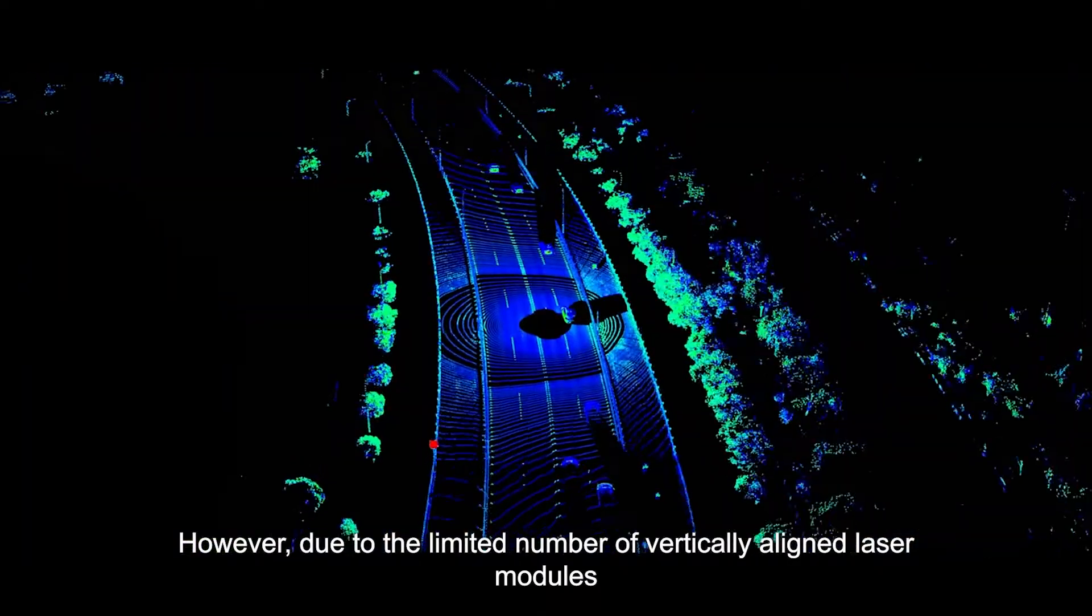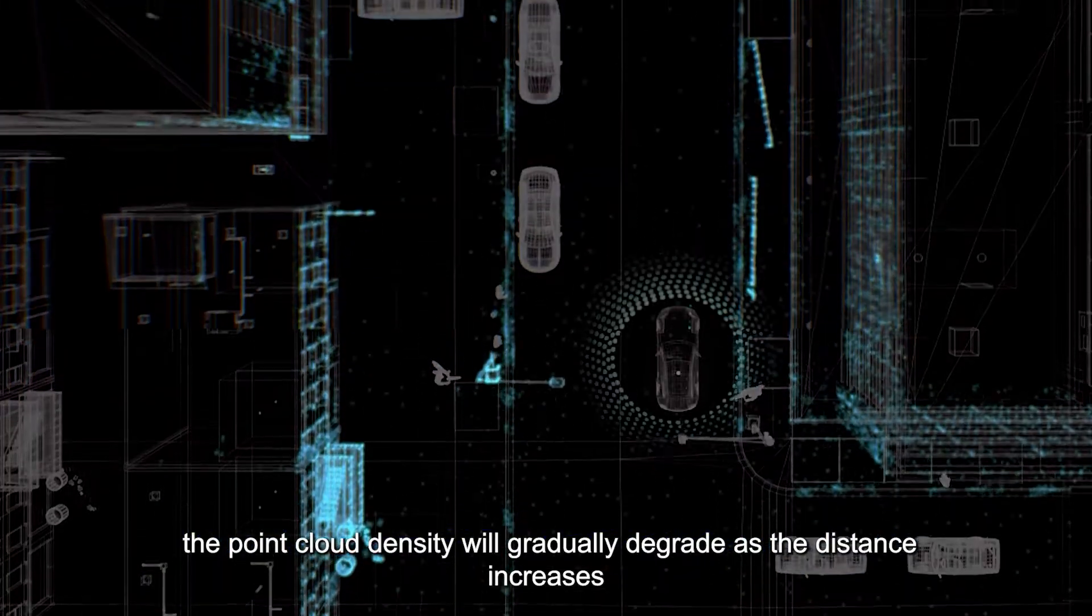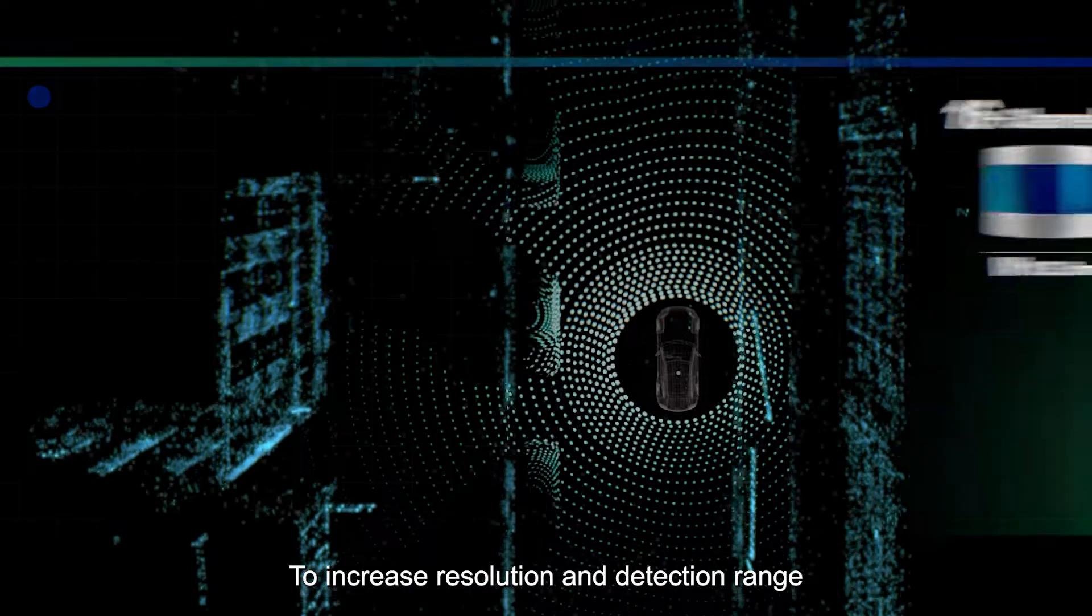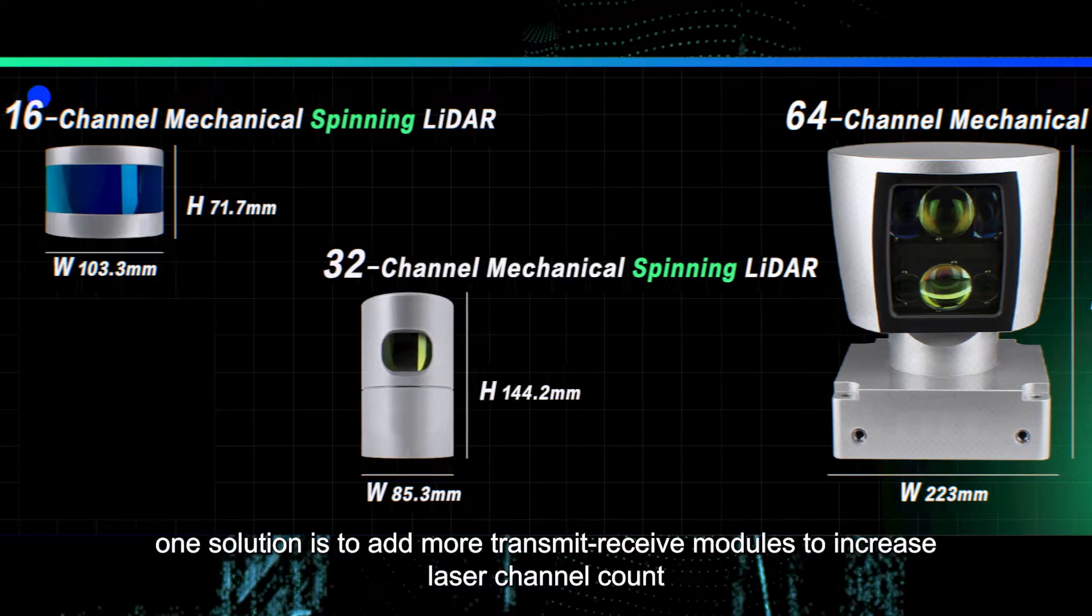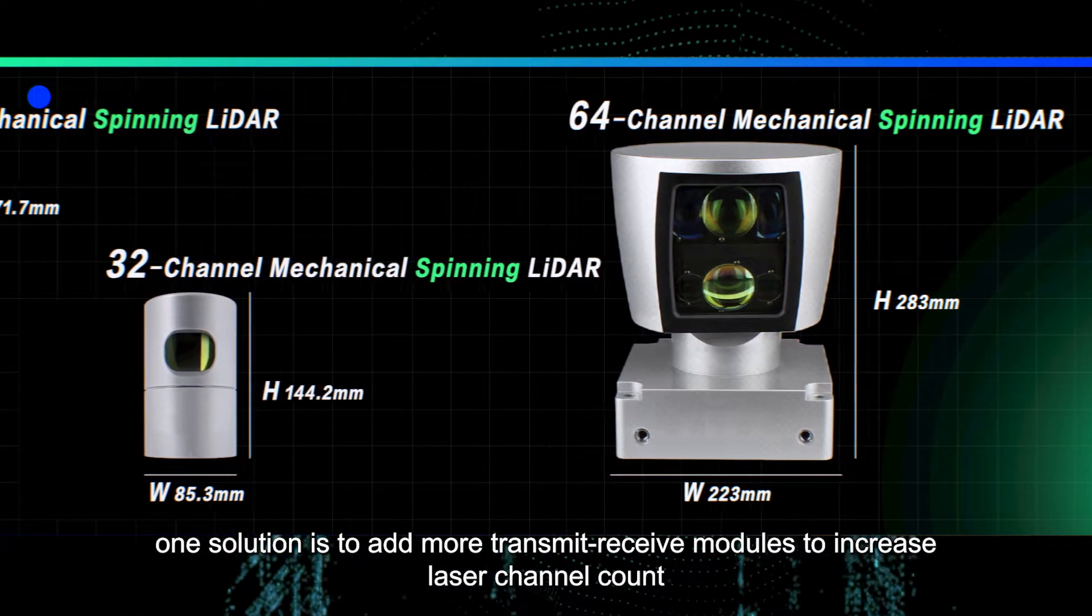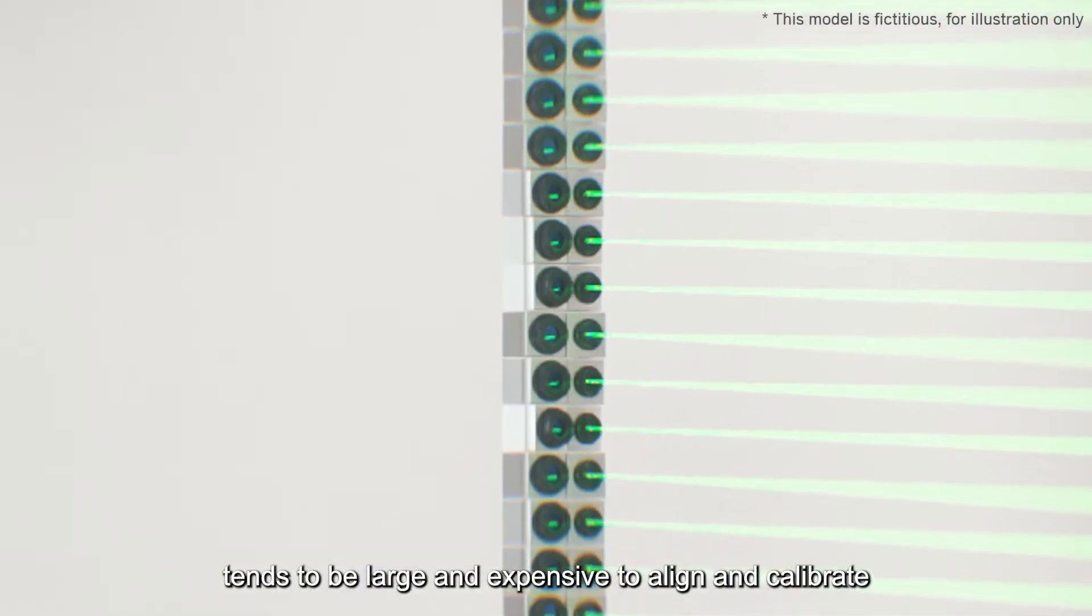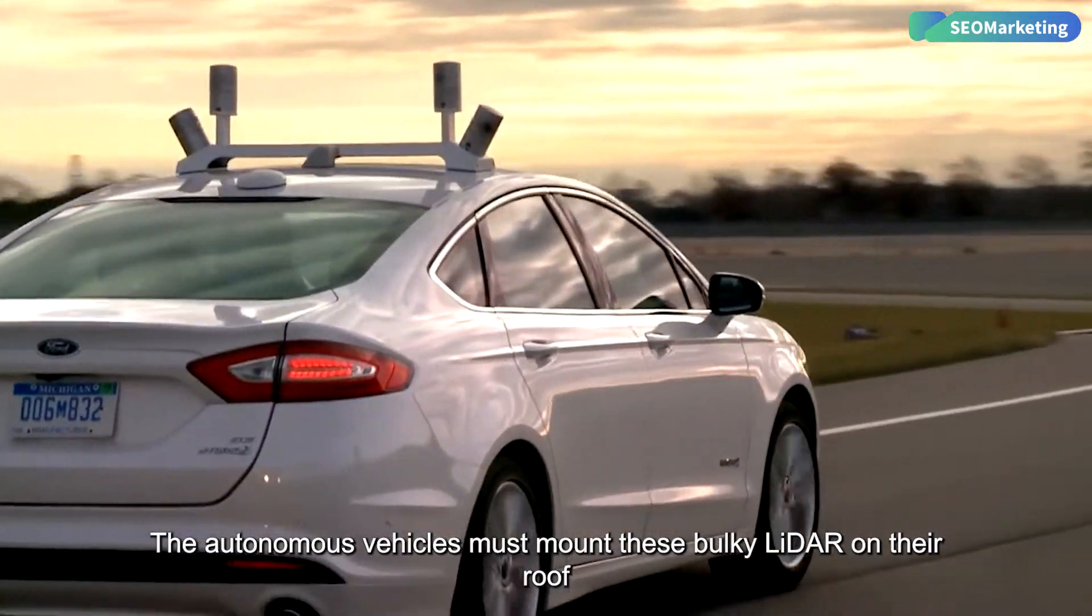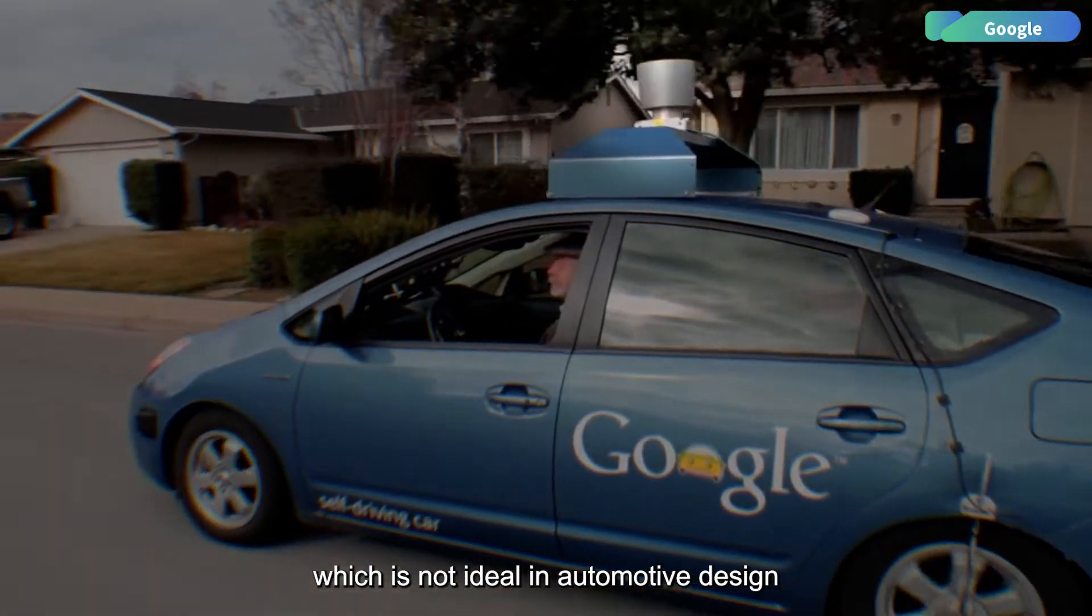However, due to the limited number of vertically aligned laser modules, the point cloud density will gradually degrade as the distance increases. To increase resolution and detection range, one solution is to add more transmit-receive modules to increase laser channel count. This is why one-dimensional spinning LiDAR tends to be large and expensive to align and calibrate. The autonomous vehicles must mount these bulky LiDAR on their roof, which is not ideal in automotive design.